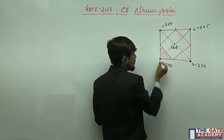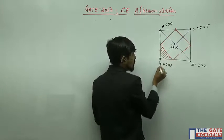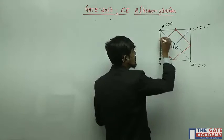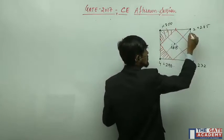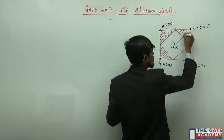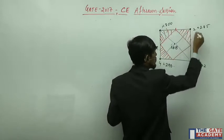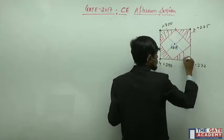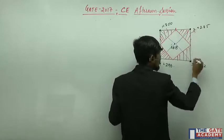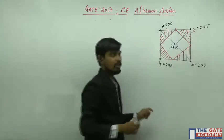From the resulting Thiessen polygon diagram, this region is the area for station 4, this is the area for station 1, this is the area for station 2, and this is the area for station 3.